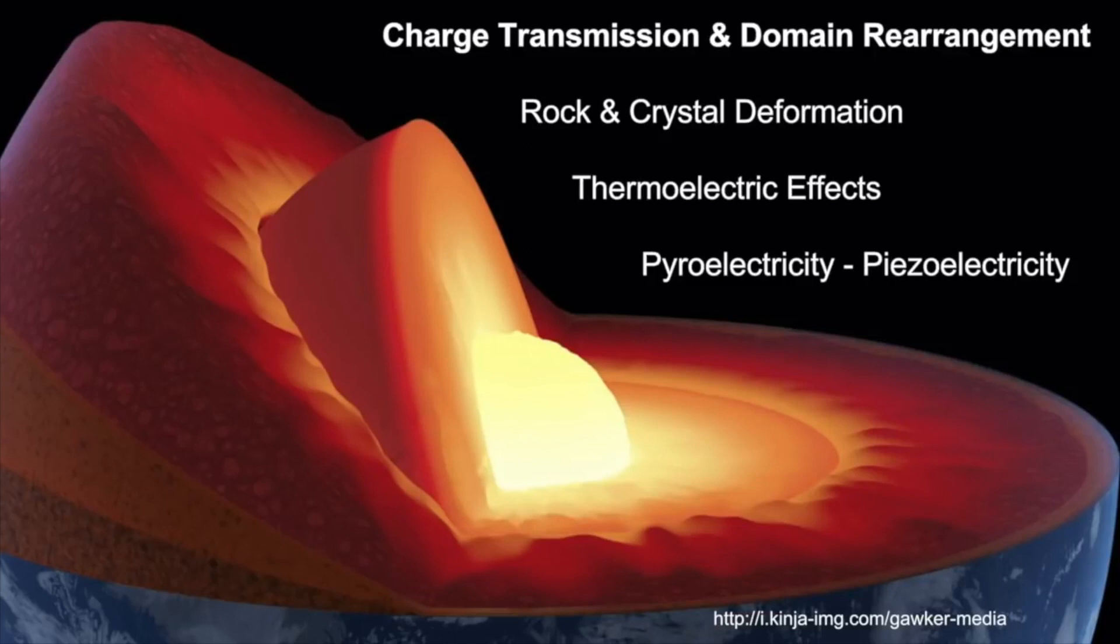Because we've got charged transmission and domain rearrangement. As this cold slab of rock and water is pushed down into the mantle, and it is heated, and it is crushed, we have rock and crystal deformation. It's mainstream science that those give off electric currents. Of course, we have the thermoelectric effects as well when you are heating up that material that was up there at the crust, and now you've plunged it into the mantle. Well, you've got thermoelectric effects as well. And so we're really talking about piezoelectricity, pyroelectricity, and you don't need anything but just to push that cold Earth and the water down into the mantle.